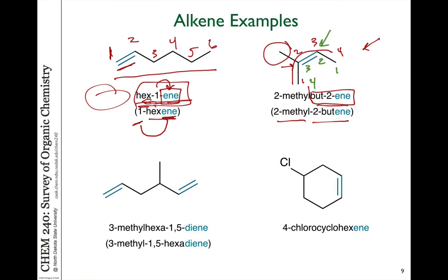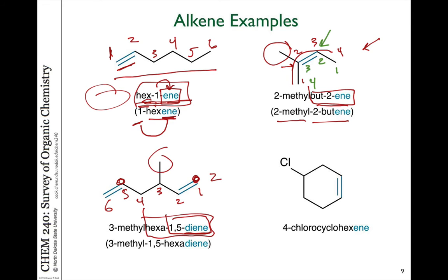When we have more than one double bond in a molecule, we have to number the positions of their starting points for both of them, and we use a prefix of the -ene to indicate how many there are. So in the case of two double bonds, you can see we have the diene prefix. I would have to number from this end to get closest to the branch. So we have a double bond starting on carbon number one and a double bond starting on carbon number five. So this is a 1,5-diene — six carbons long, so it's hexa-1,5-diene. And there's a methyl group on the three position, so that's 3-methylhexa-1,5-diene. Either one of those ways to name it I would accept, as they are basically being used interchangeably at the moment.